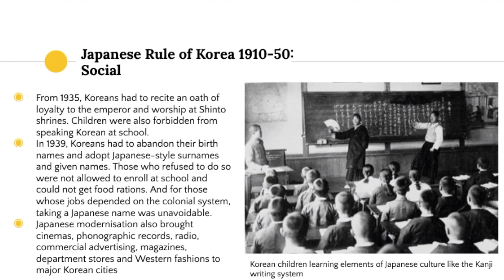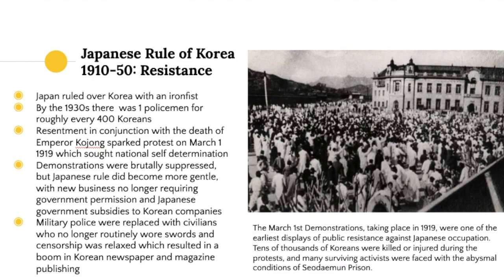From 1935, Koreans had to recite an oath of loyalty to the Emperor and worship at Shinto shrines. Korean children learned Japanese culture and the kanji writing system. Most aggressively, from 1939 Koreans had to abandon their birth names and adopt Japanese-style surnames — without a Japanese name, you couldn't enroll in school, get food rations, or find employment. Modernization brought cinemas, radio, commercial advertising, magazines, department stores, and western fashions to major cities like Seoul and Busan.